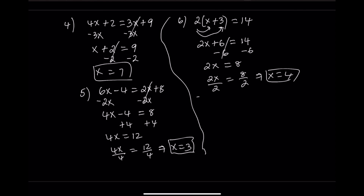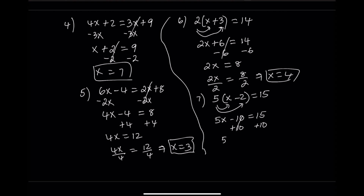Equation 7: 5 times the quantity x minus 2 equals 15. Step 1: distribute — 5 times x minus 5 times 2 — gives 5x minus 10. Now we have 5x minus 10 equals 15. Step 2: add 10 to both sides — 5x equals 25. Step 3: divide by 5 — x equals 5.